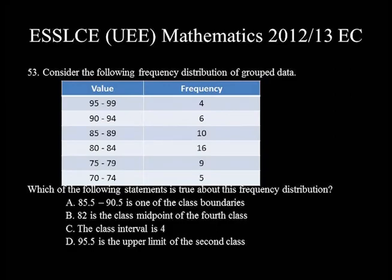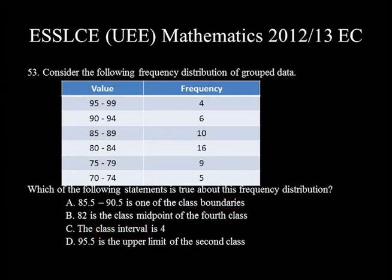Consider the following frequency distribution of grouped data: 95 up to 99 with frequency 4, 90 up to 94 with frequency 6, 85 up to 89 with frequency 10, 80 up to 84 with frequency 16, 75 up to 79 with frequency 9, 70 up to 74 with frequency 5. Which of the following statements is true about this frequency distribution? The choices are asking about class boundaries and class intervals. To reply to such a question, we have to make sure that the grouped data is in continuous form. But the data is not in continuous form because there is a one-unit gap between the lower class limit of a given class and the upper class limit of the next class. Thus, let's convert the data into continuous form by calculating class boundaries.